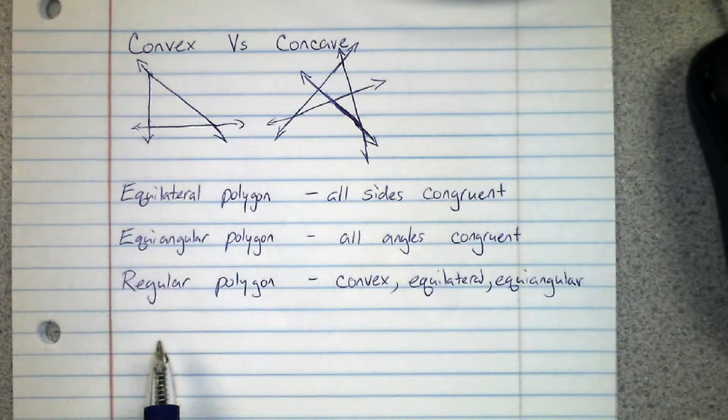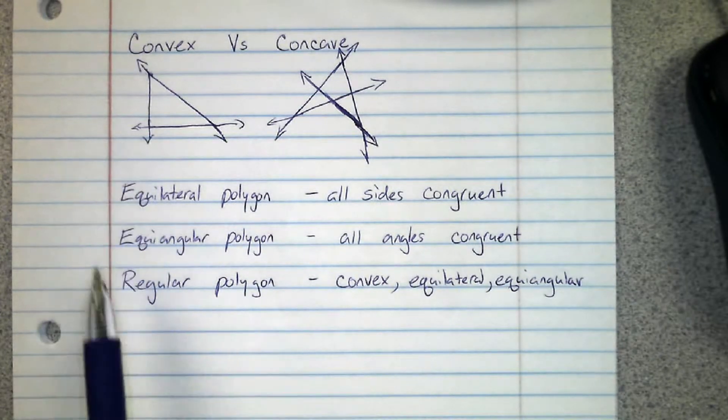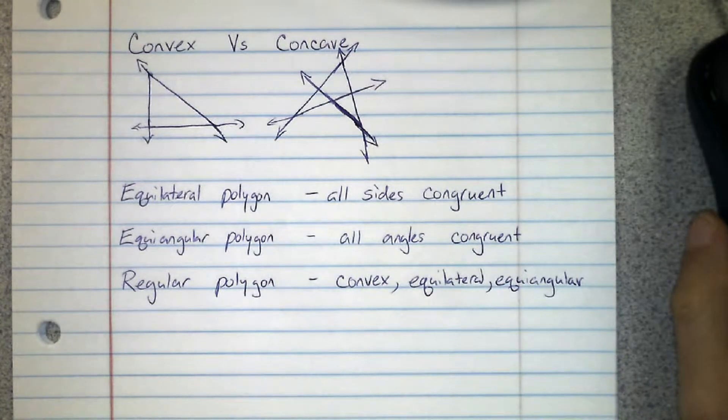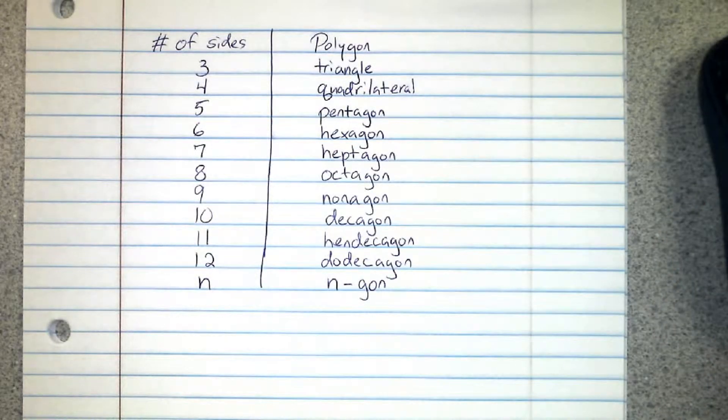A regular polygon is one that is convex, equilateral, and equiangular. So regular polygon: convex, all sides and angles congruent.